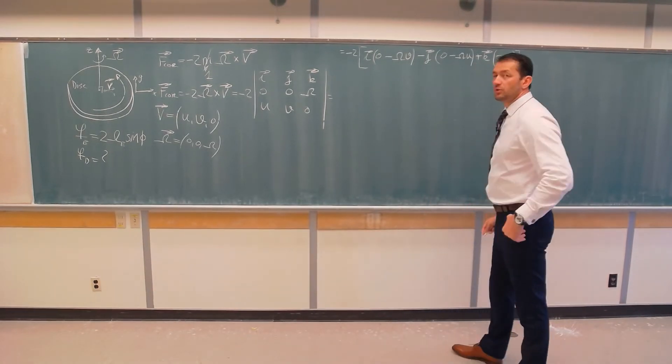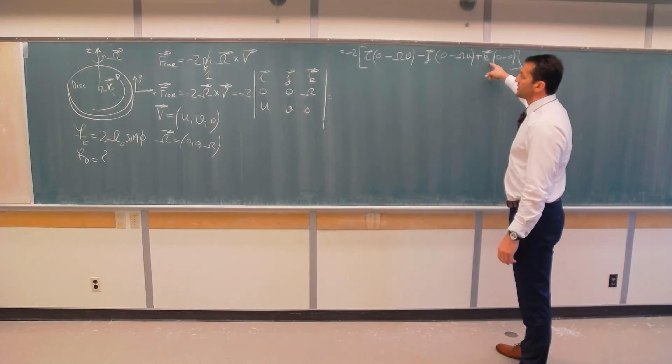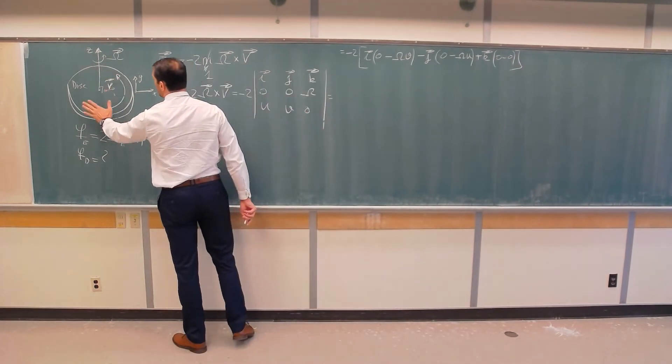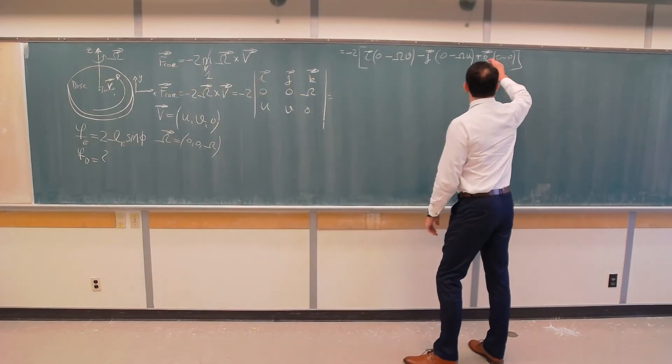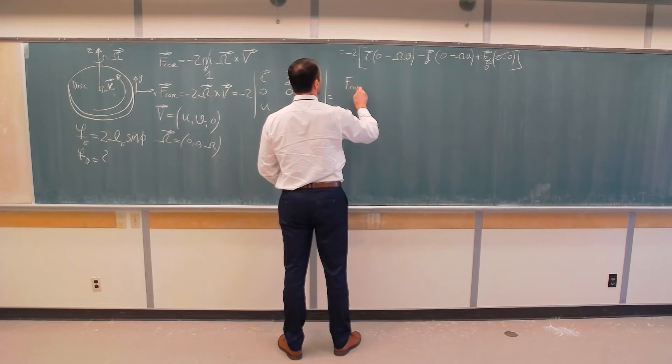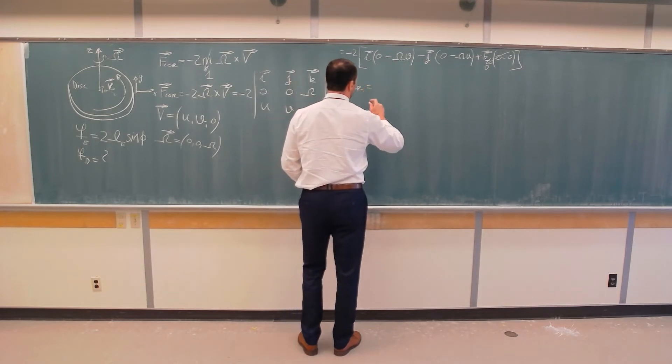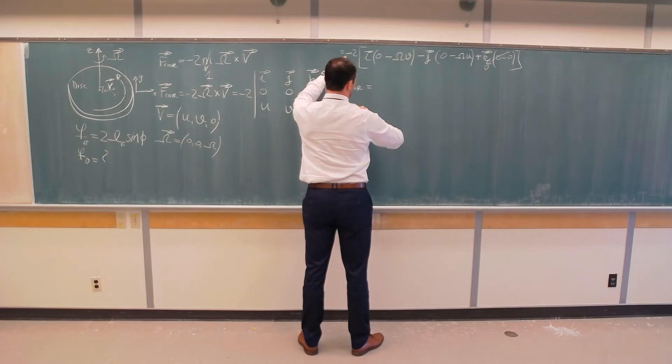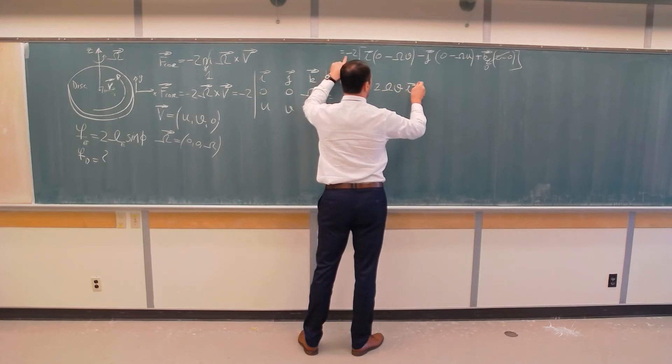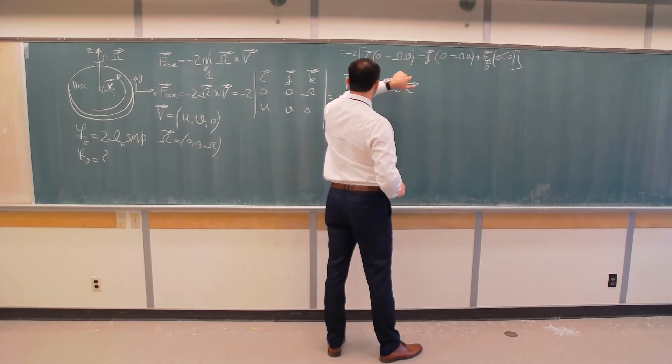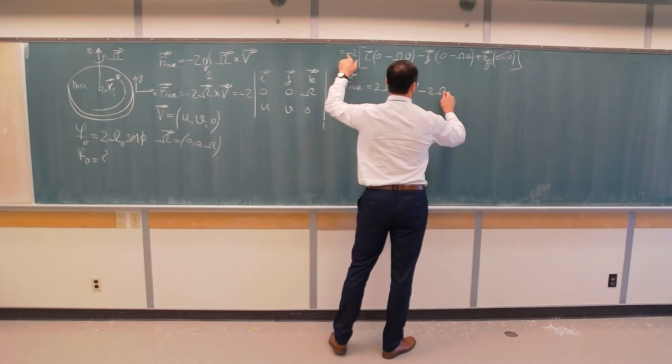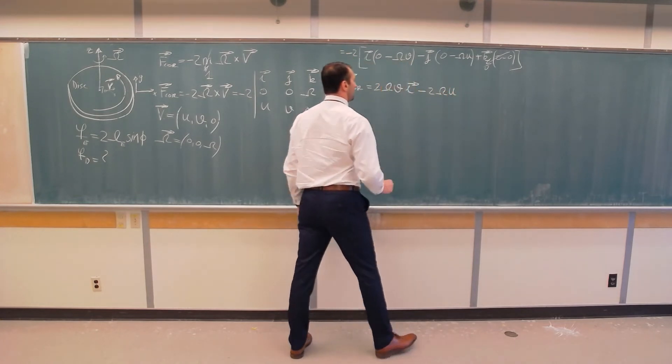And that makes sense that we will not end up with any force in the vertical direction, because everything, all motion is constrained in the plane of this disk. So, this is zero, which means that f Coriolis is equal, this minus and this minus will give me plus. So, two omega v in the i-direction. These two minuses will give me plus, but this minus keeps everything negative. minus two omega u in the j-direction.